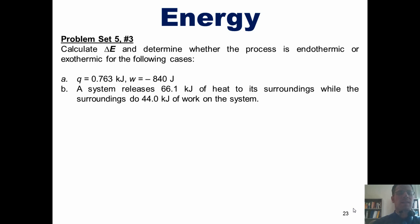So here's another question: Calculate delta E and determine whether the process is endothermic or exothermic for the following cases. A: heat equals 0.763 kilojoules and work equals negative 840 joules. And B: a system releases 66.1 kilojoules of heat to its surroundings, while the surroundings do 44 kilojoules of work on the system. Let's begin by looking at part A. How in the world do we determine delta E for that? Well, we have to remember the equation I shared with you earlier, that delta E equals heat plus work. In a very straightforward manner in part A, we've been given the value of heat and the value of work.